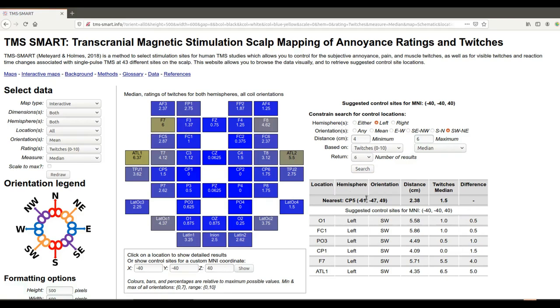But because we didn't map the entire brain and the entire scalp, the way this works is by first finding the closest electrode to your chosen MNI coordinate, and then recreating the alternative electrode locations on that basis.